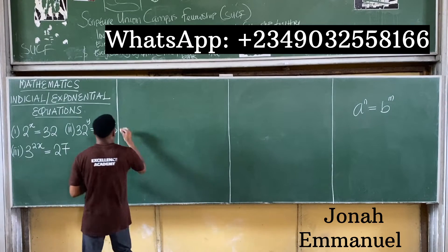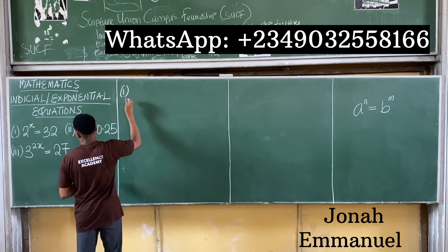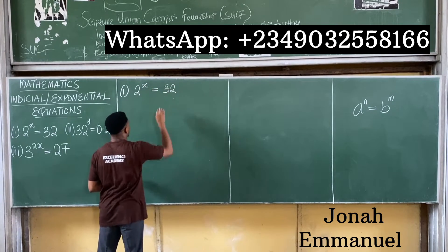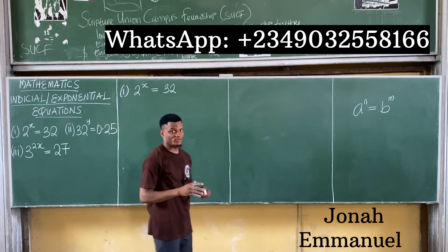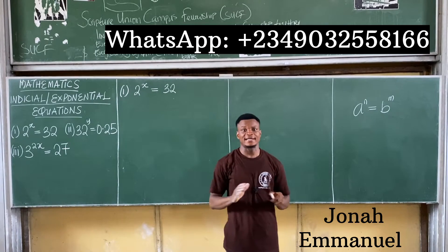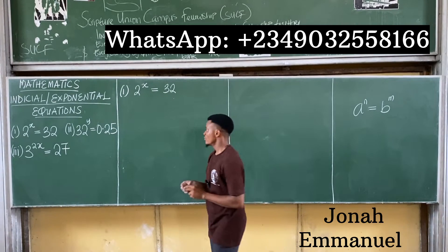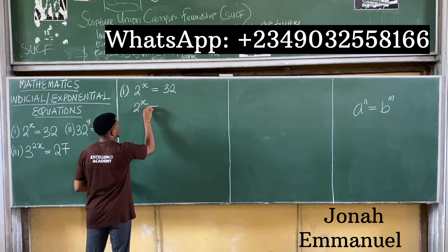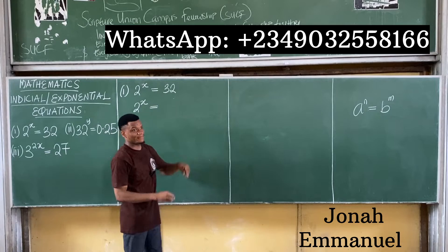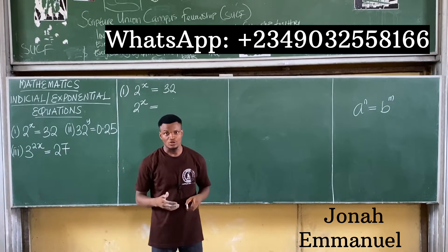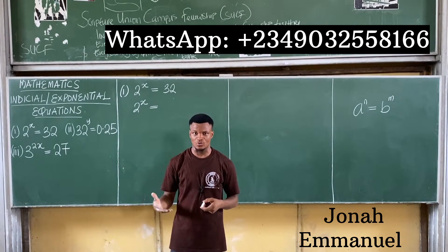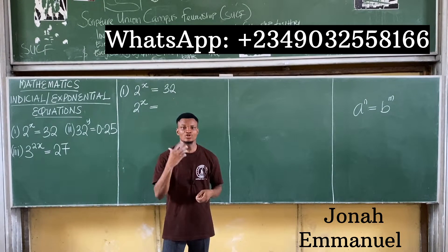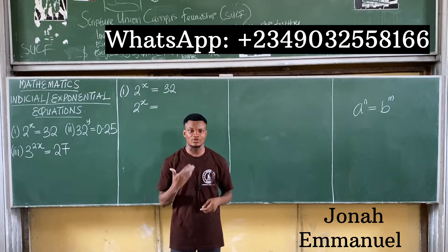So the first example: I have equation 1, which is 2 to the power x is equal to 32. My first task would be to express both sides of the equation in the same base. The base is 2. So I express 32 in terms of 2 — 32 is equal to 2 to the power 5, because 2 multiplied by itself 5 times gives you 32.